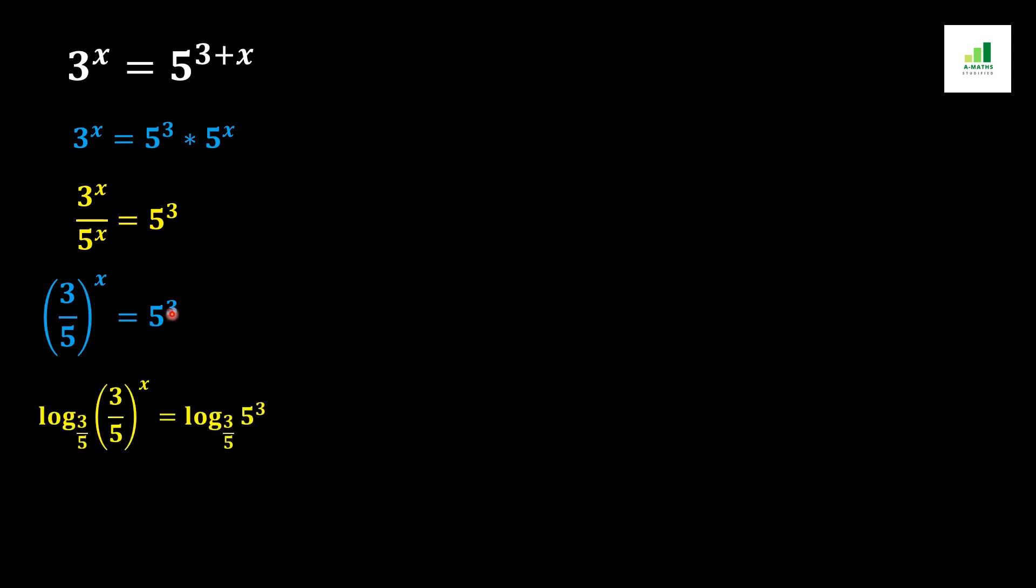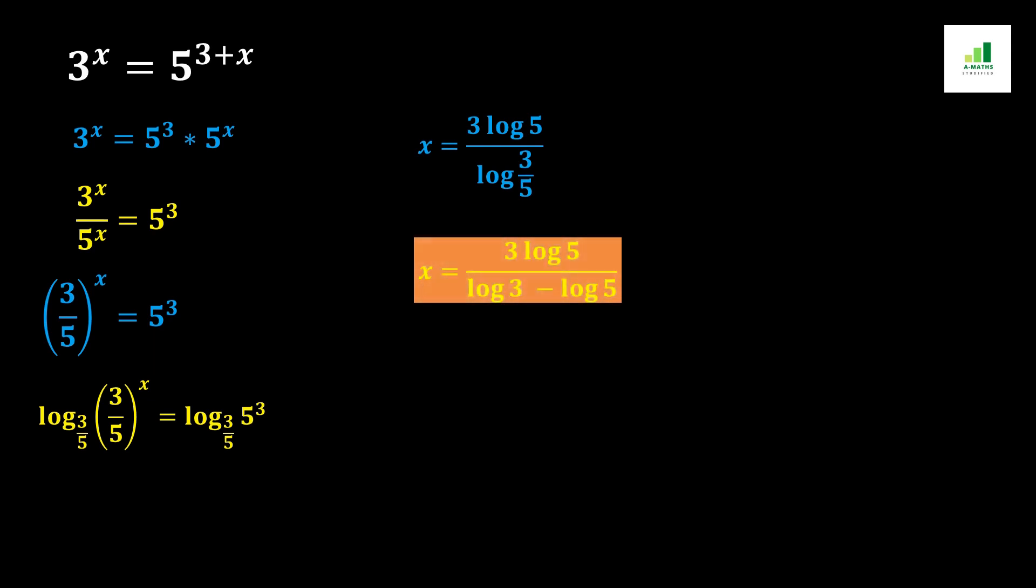Now we should apply on both sides of the equation log base 3 over 5. As a result we will get from the basic rule of logarithm x equals 3 log 5 over log 3 over 5. This log 3 over 5 from the basic rule of logarithm can be written as log 3 minus log 5 and this is the answer for this expression.